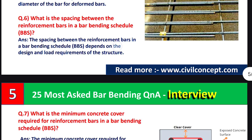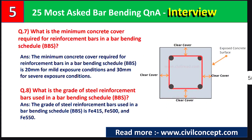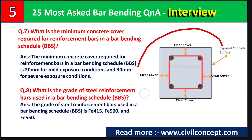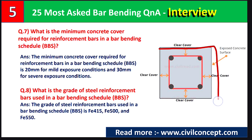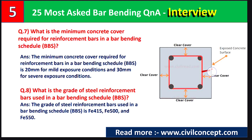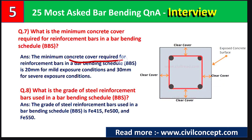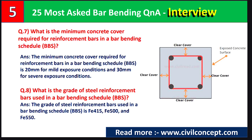Question number seven: what is the minimum concrete cover required for reinforcement bars in a bar bending schedule? In a column section, the gap between the outer exposed surface of the concrete and the stirrups is known as clear cover. The minimum concrete cover required is 20 mm for mild exposure conditions and 30 mm for severe exposure conditions.